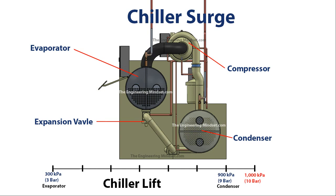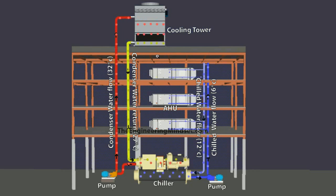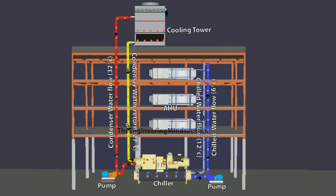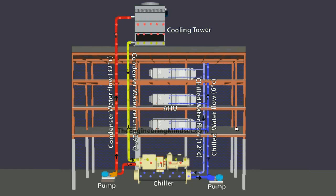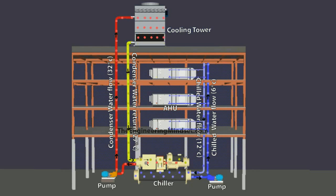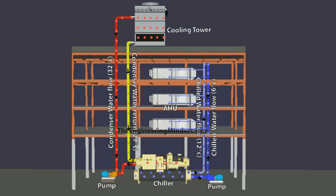So what causes chiller surge? We know it's going to be an increase in pressure in the condenser. The majority of the time it's usually something to do with a cooling tower or the flow of condenser water. If a partial blockage occurs in the condenser return line, the flow rate will drop below the minimum required, and the condenser won't be able to dump its heat, raising the pressure. If the cooling tower is unable to reject enough heat, the water temperature increases, restricting how much heat the condenser can absorb. This might be caused by a drive belt breaking or the motor having a fault.